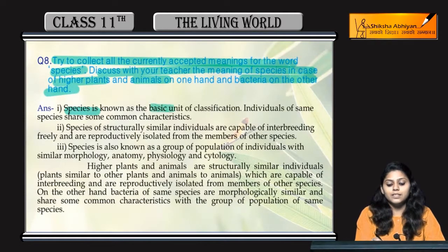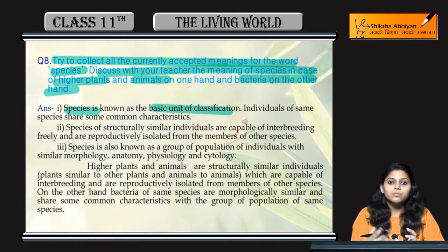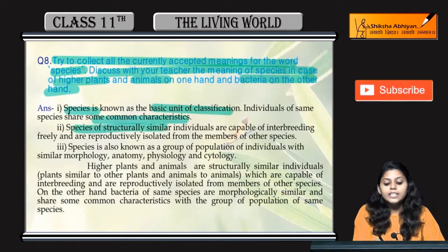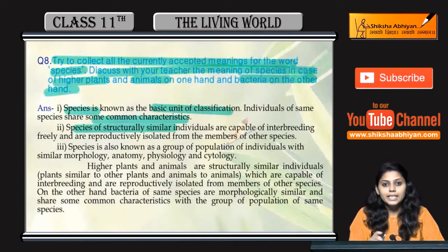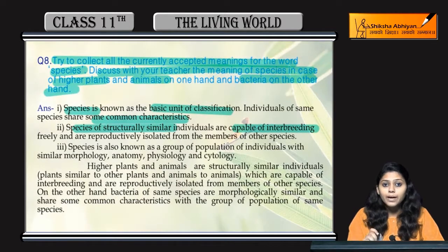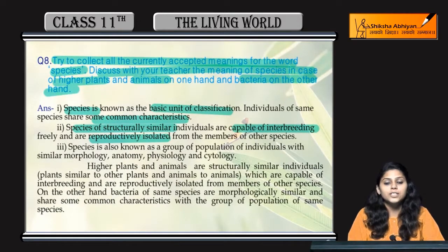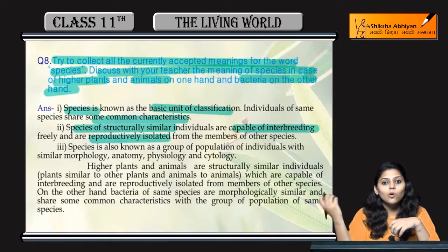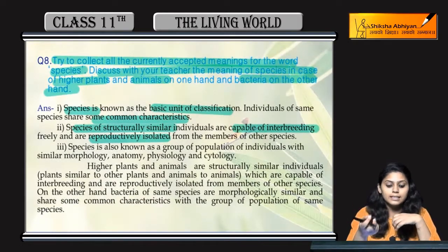Species is the basic unit of classification. Eek species me individuals of which same characteristics include hootay hain, jho common characteristics show kertay hain. Or similar structure ke individual bhi eek species ke under aate hain, which are capable of interbreeding. But they are reproductively isolated from other members of other species — wohh apni species ke under interbreed kar saktay hain, reproduction mechanism show kertay hain, but kisii aur species ke saath breeding show nahi kertay hain.